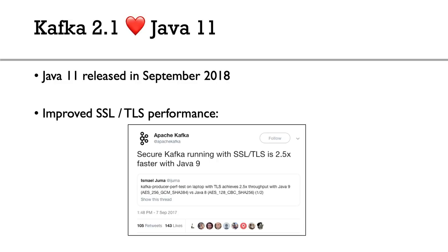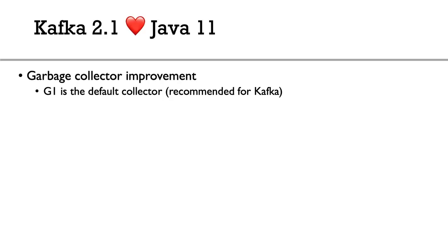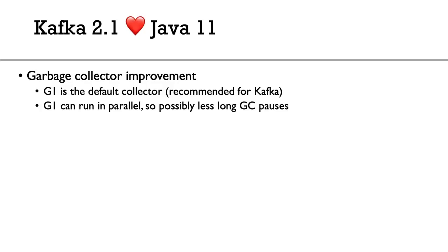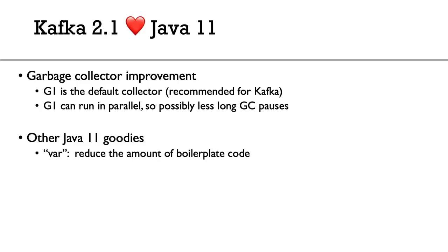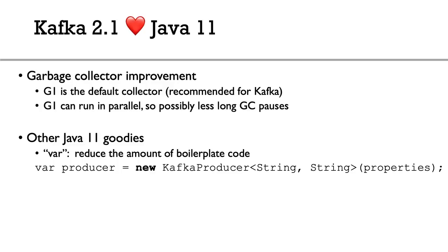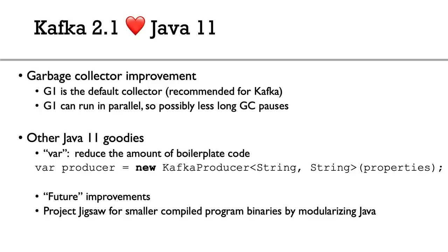There is also massive garbage collector improvement: G1 is now the default collector, which was already recommended for Kafka, and G1 can now run in parallel — meaning fewer long GC pauses. Other Java 11 goodies include the `var` keyword, which reduces boilerplate. For example, instead of declaring the full Kafka producer type on the left, you can just write `var producer = new KafkaProducer`. There are also improvements with futures and Project Jigsaw, which modularizes Java for smaller binaries and more efficient runtimes.